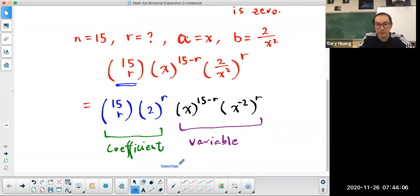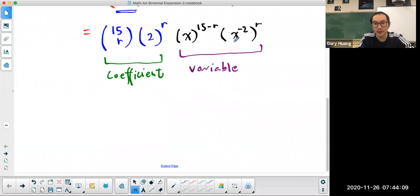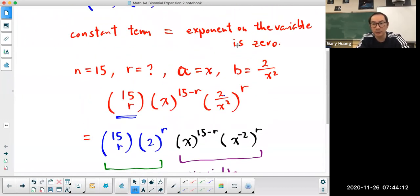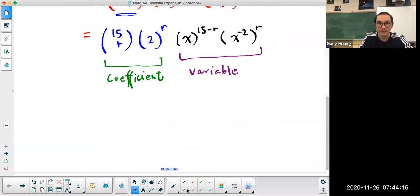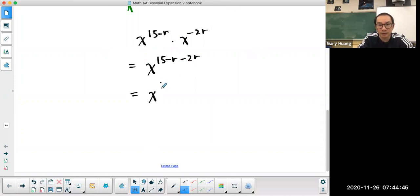And what's so special in this particular question is I want the variable to have an exponent equal to zero, because that's what a constant term means. So I'm going to combine this. This is going to become x to the power of 15 minus r times x to the power of negative 2r. Now how do you multiply powers of the same base? You keep the base and you add the exponents. So this is 15 minus r plus negative 2r, which is same thing as minus 2r. And therefore, you're going to get x to the power of 15 minus 3r.